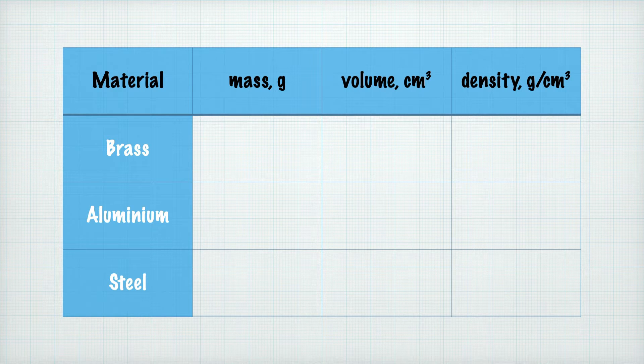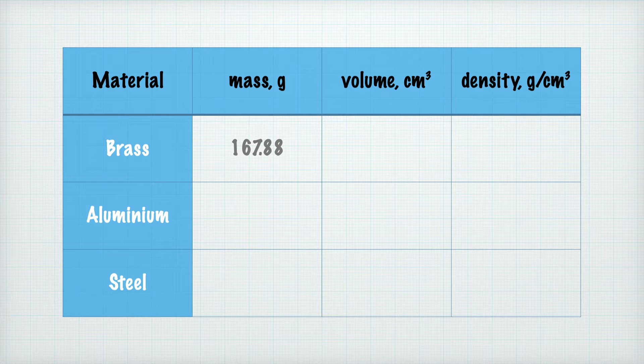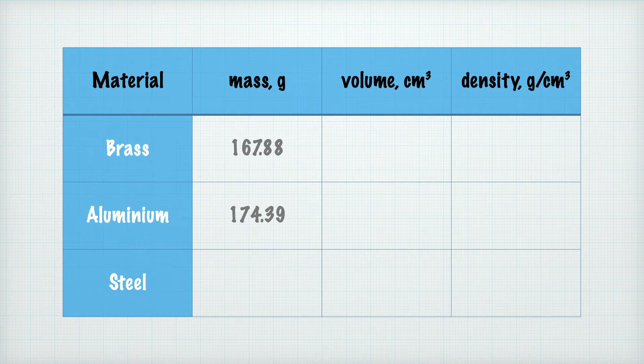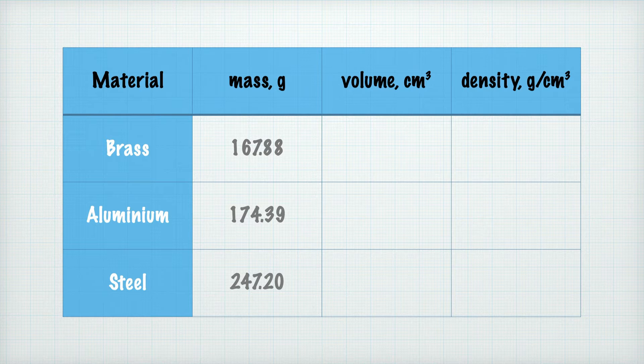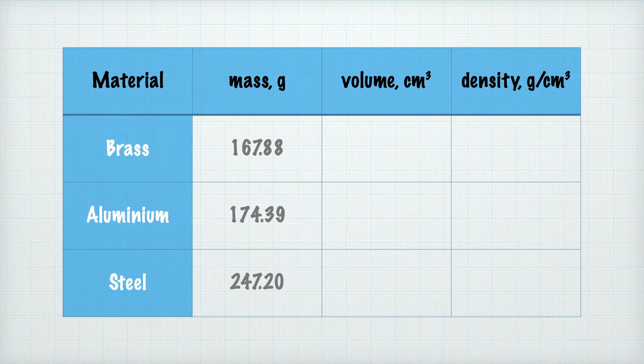Here are the results so far. Brass has a mass of 167.88 grams, and aluminum's mass of 174.39 grams, and steel has a mass of 247.20 grams. Now it's time to get the ruler out and measure the block's dimensions. It's time for the music again.